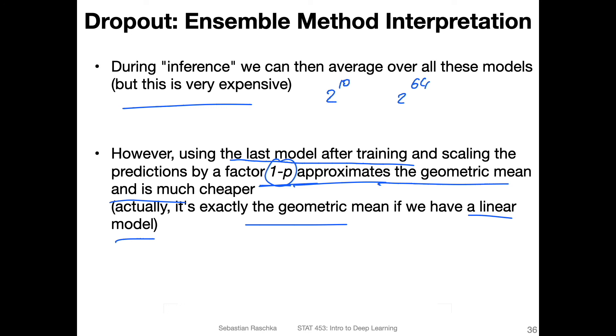So essentially, we are approximating the geometric mean and dropout of a model ensemble. And this is essentially the explanation of dropout why it might work well, because essentially we can think of it as a model ensemble.